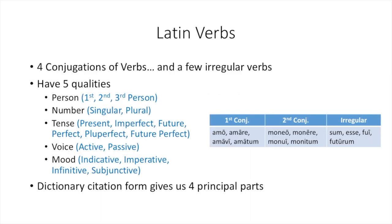To review verbs, you know that verbs are separated into four conjugations — different groups of verbs that are formed in similar patterns. The first conjugation and second conjugation are ones we've already talked about for the present active tense and voice. The first conjugation has that long -are in its second principal part, and the second conjugation has the long -ere in its second principal part.